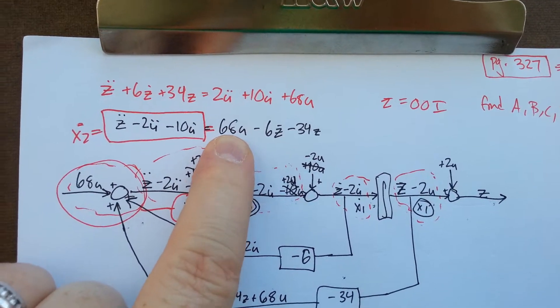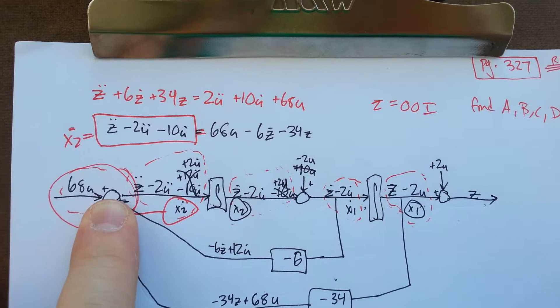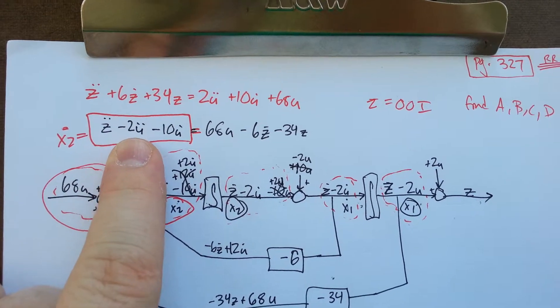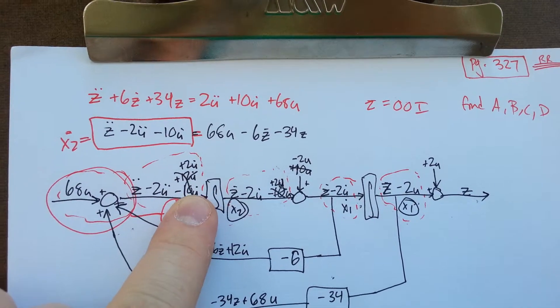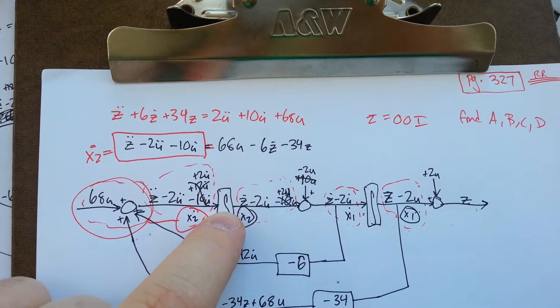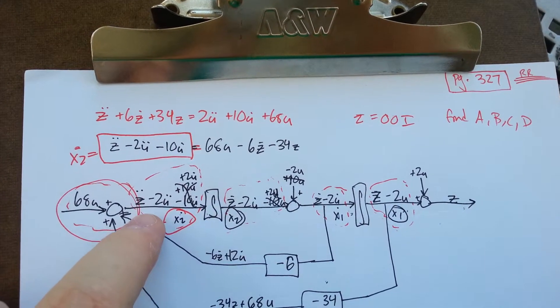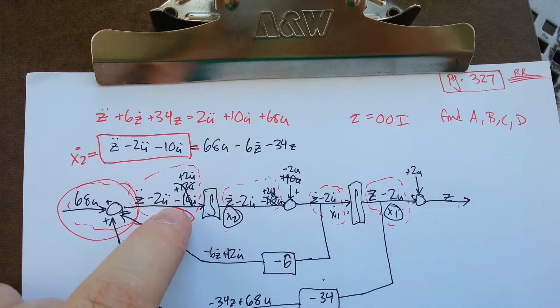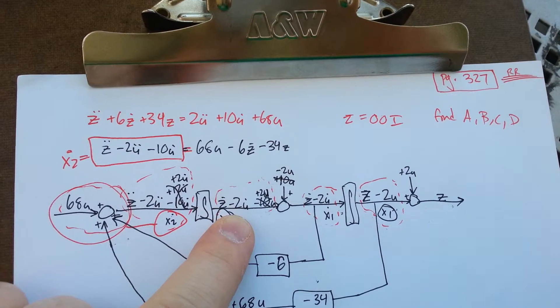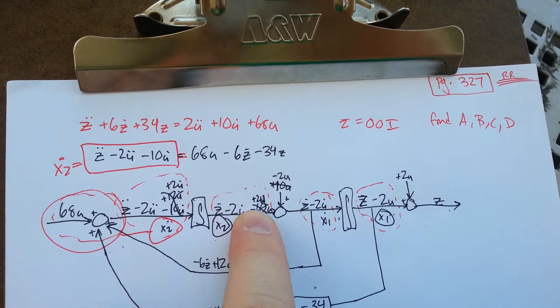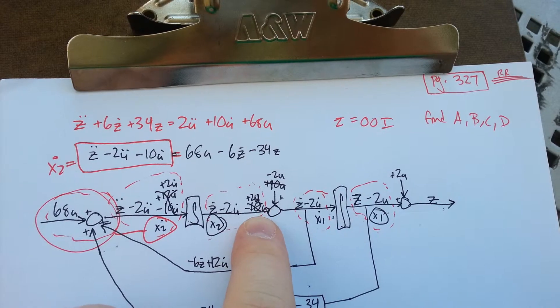Then we look at this and say I have 68u coming in, and everything else is what you start with. You put it through an integral and you'll have that z double dot minus 2u dot minus 10u dot becomes z dot minus 2u minus 10u. Add a summer and cancel out that 10u. You can always eliminate just the input variable u.